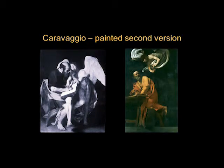So he had to paint a second version. It's still very naturalistic, but the saint now looks more like a sage, like a wise man — a very naturalistic evangelist writing. He is writing for himself; he's perfectly literate and can write the Gospel. But he is still receiving divine inspiration: he looks up to a flying angel who seems to be counting out points on his fingers. I always assume he's doing the genealogy of Christ, which is the very beginning of the Gospel of St. Matthew. This one was accepted.